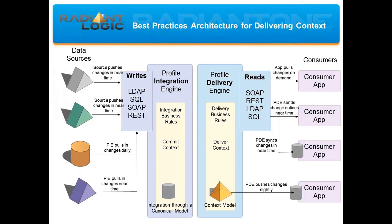When you look at the complete architecture, you have the existing data silos on the left, which get fed into some kind of profile integration engine — ideally a database. Then from the database, the profile delivery engine generates all kinds of context-driven views, which get materialized into the HDAP store. From here, the information is consumed by a variety of different applications shown on the right-hand side, using whatever protocol they choose — it may be LDAP, SQL, REST, whatever the flavor of the day is.